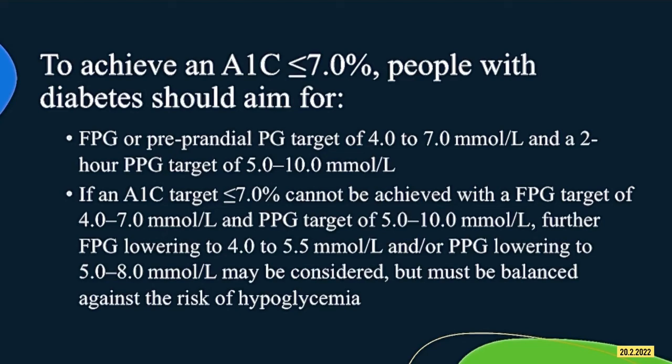To achieve an HbA1c of less than or equal to 7%, the patient should maintain fasting plasma glucose within 4 to 7 mmol/L and 2-hour postprandial glucose within 5 to 10 mmol/L. If HbA1c less than 7% is still not achieved despite these values being in range, consider maintaining fasting plasma glucose within the narrower range of 4 to 5.5 mmol/L and/or postprandial glucose of 5 to 8 mmol/L. This must be balanced against the risk of hypoglycemia.